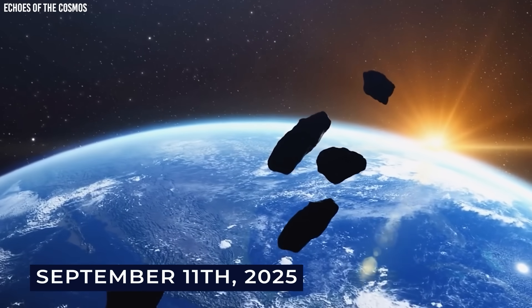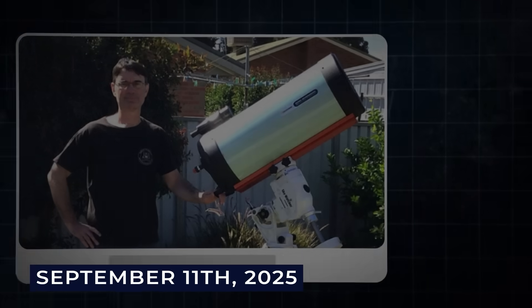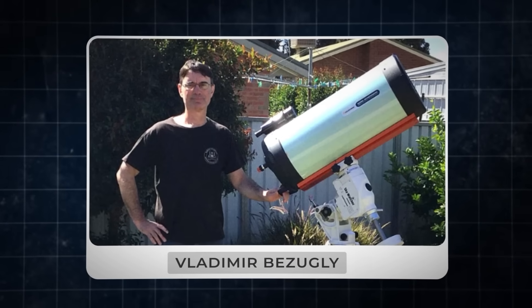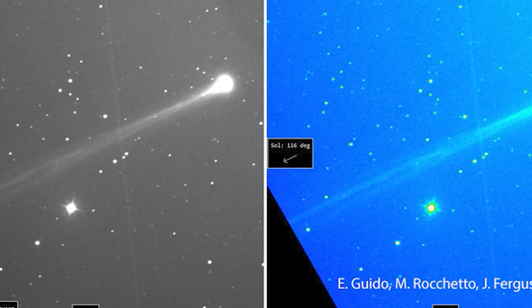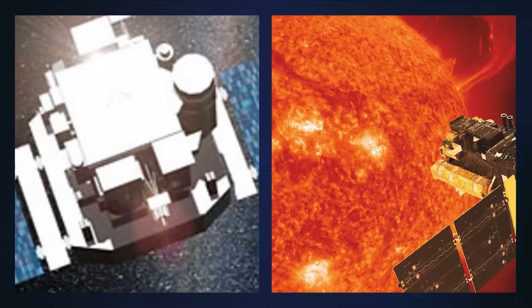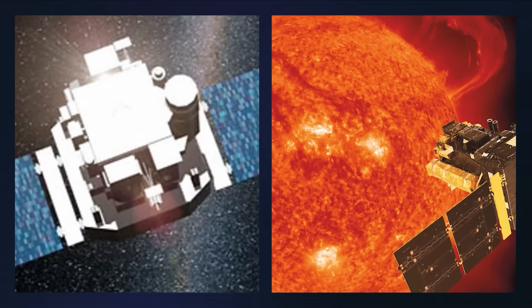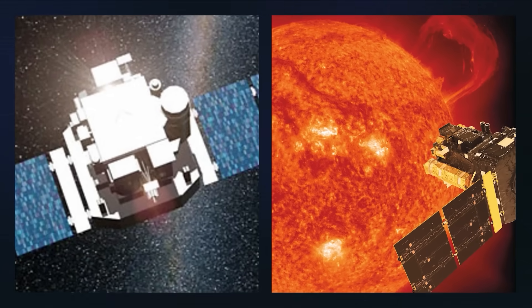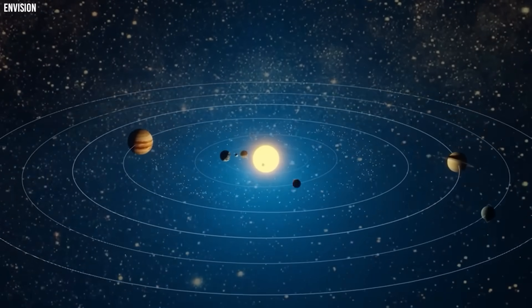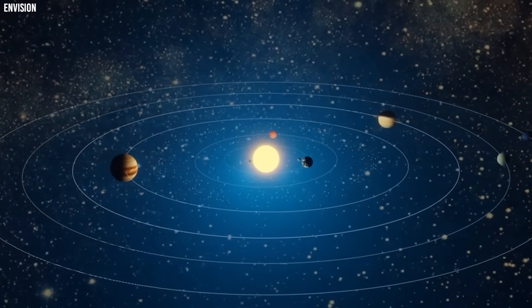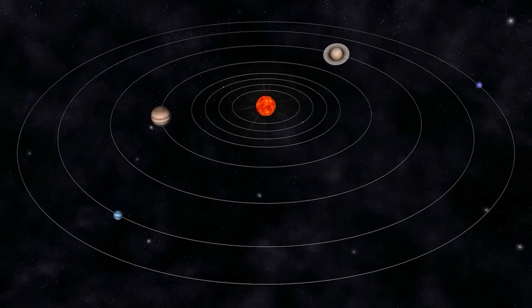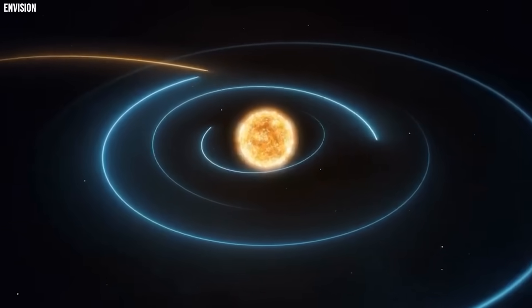The discovery that almost didn't happen. On September 11th, 2025, a Ukrainian astronomer named Vladimir Bezugly was looking through old images from a space telescope called SOHO, specifically from an instrument called SWAN. SWAN doesn't take pretty pictures of space. Instead, it watches hydrogen gas floating around the solar system.